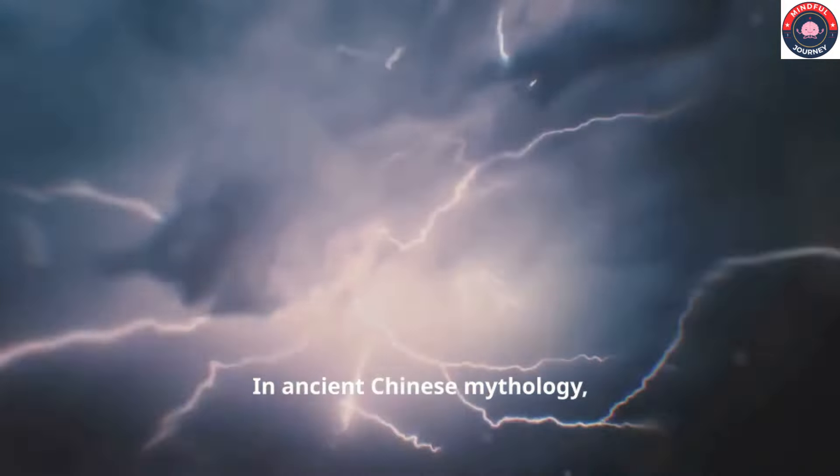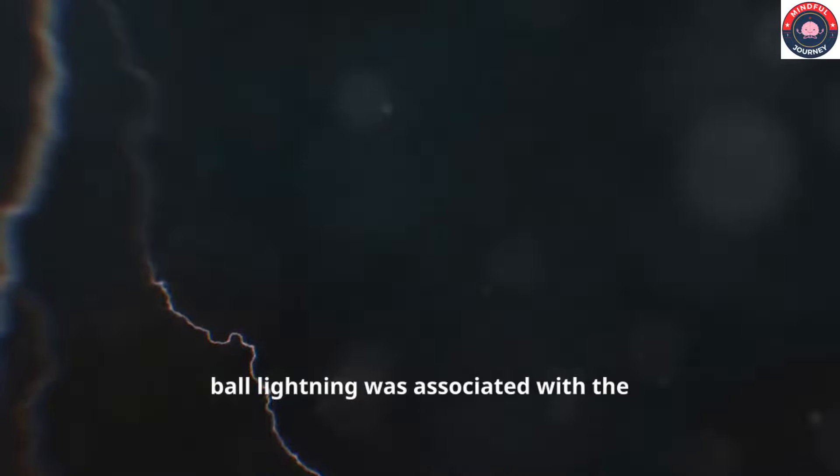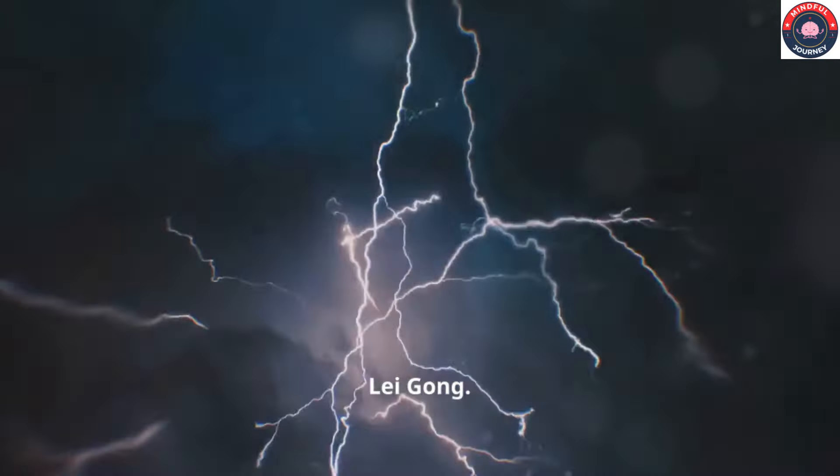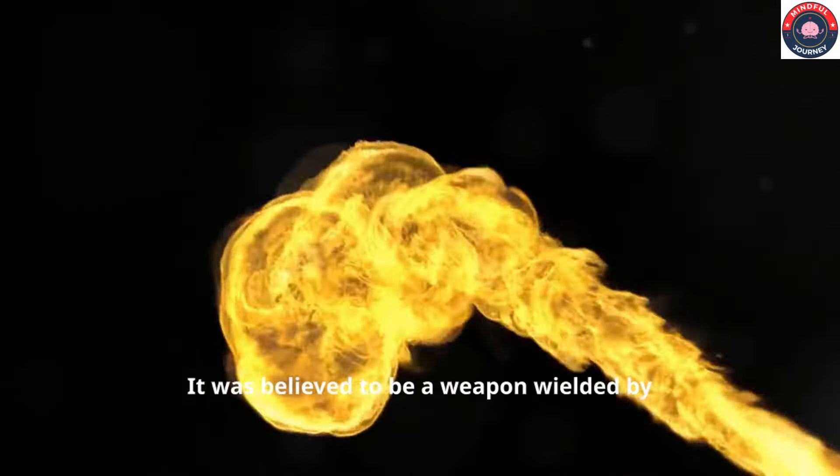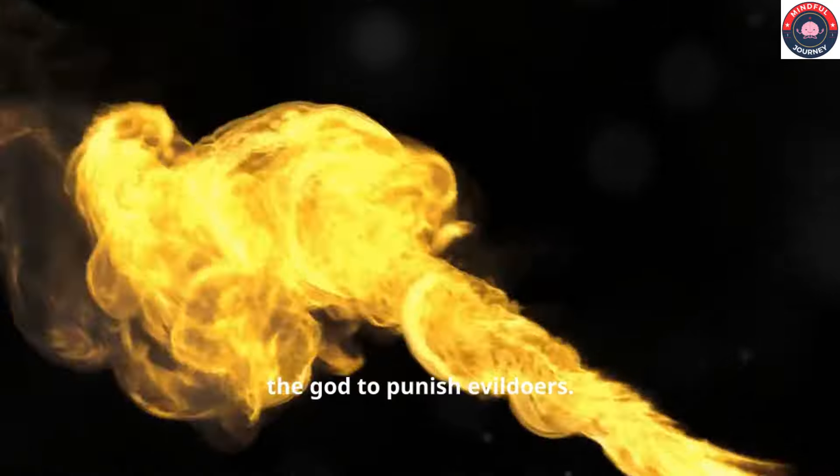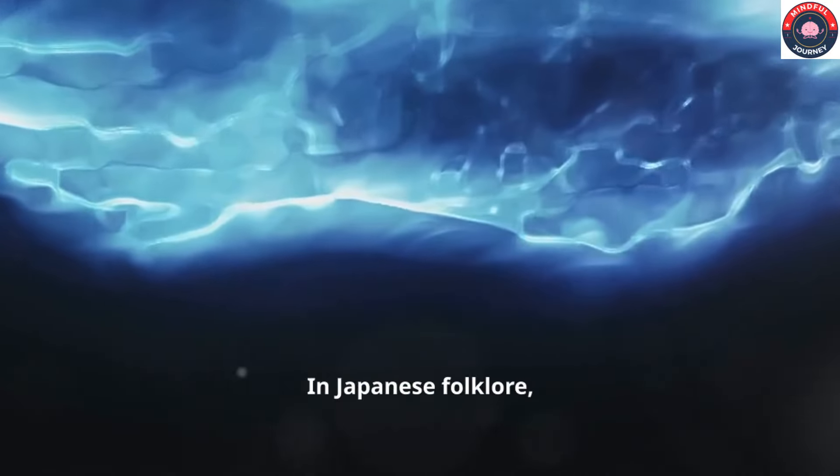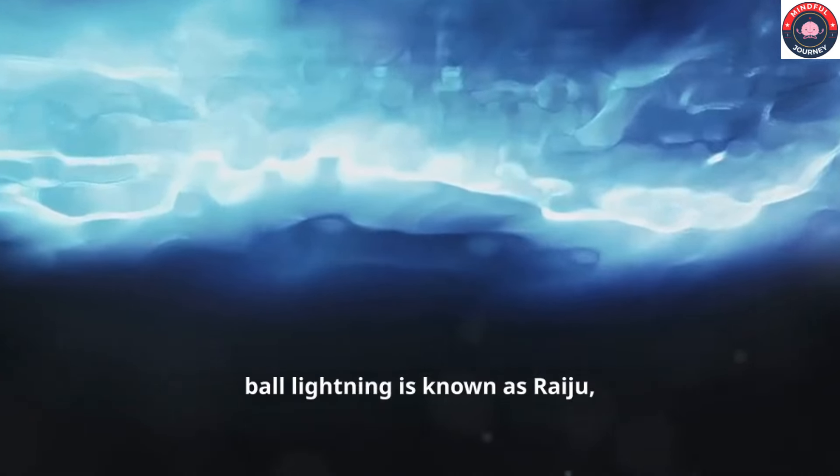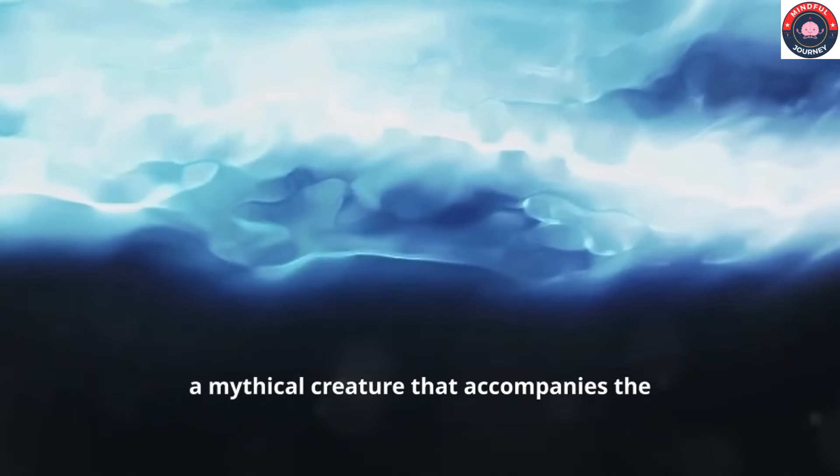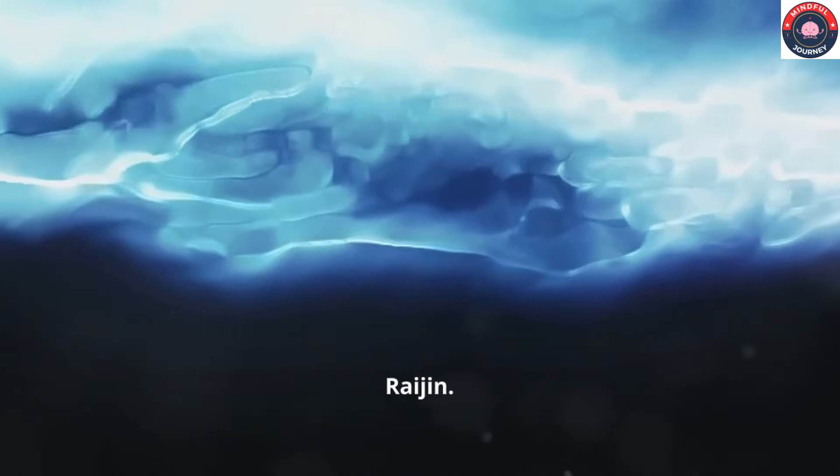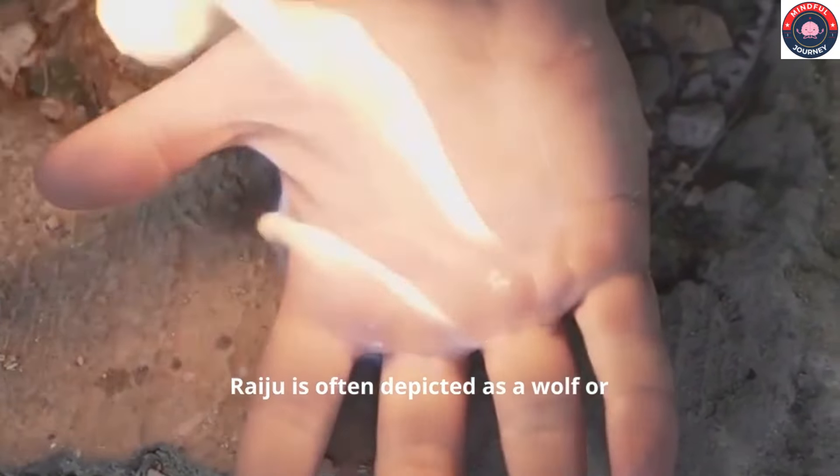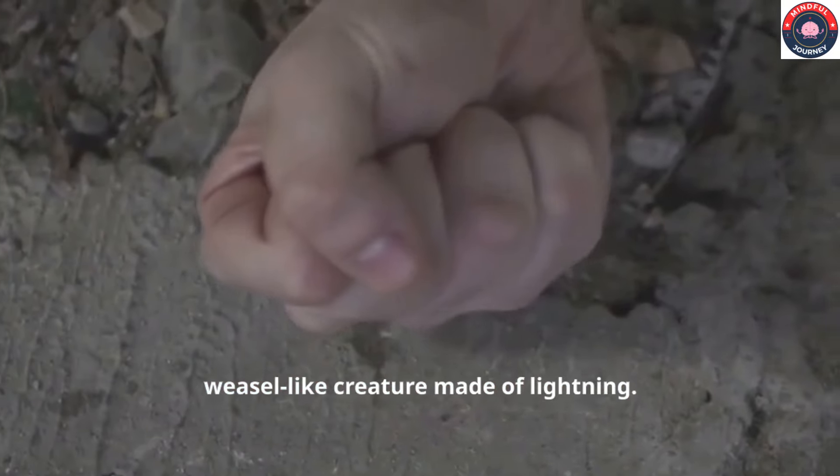In ancient Chinese mythology, ball lightning was associated with the thunder god, Lei Gong. It was believed to be a weapon wielded by the god to punish evildoers. In Japanese folklore, ball lightning is known as raiju, a mythical creature that accompanies the thunder god, Raijin. Raiju is often depicted as a wolf or weasel-like creature made of lightning.